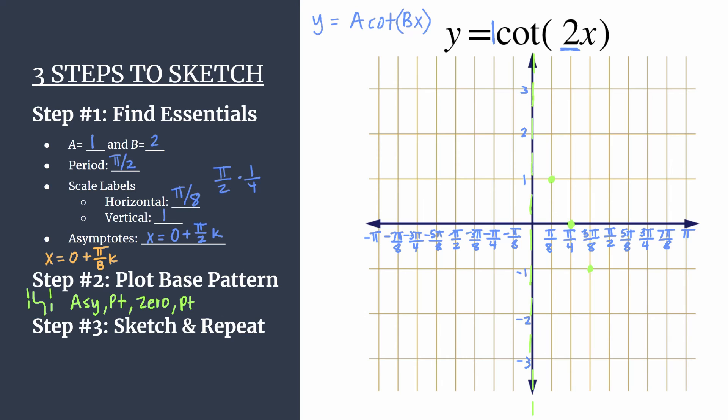All right, so we have our base pattern here. This is one cycle of y equals cotangent 2x. Let's go ahead for step three. We're going to sketch in the actual graph connecting these points, and then we'll repeat for as many cycles as we need.